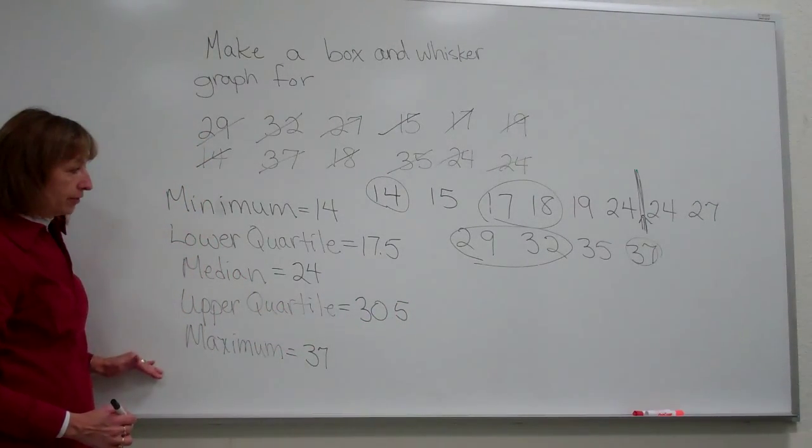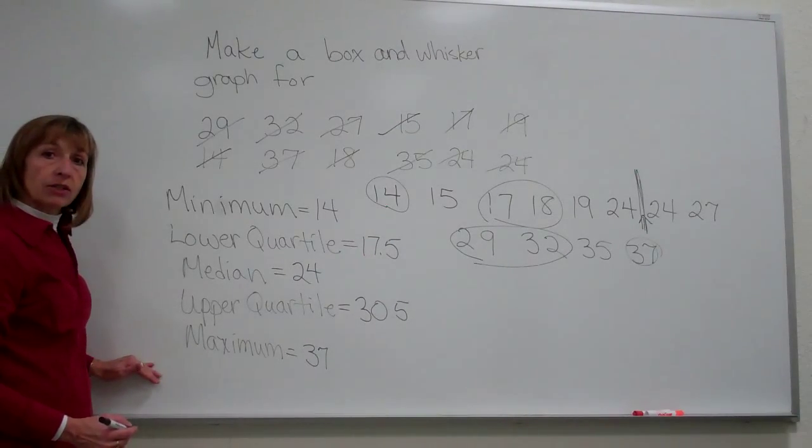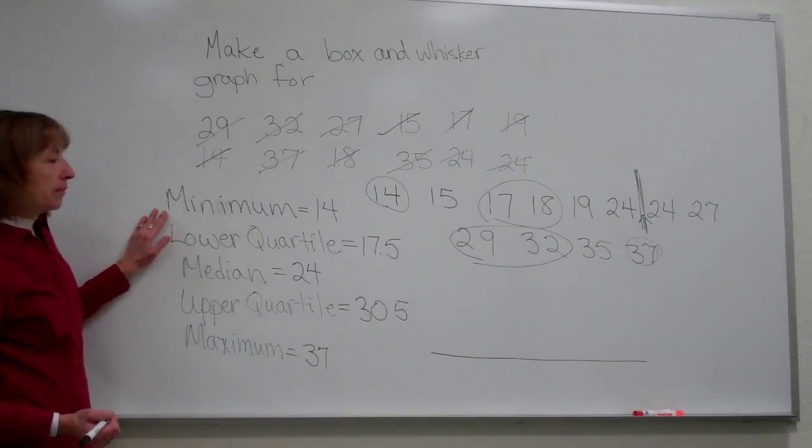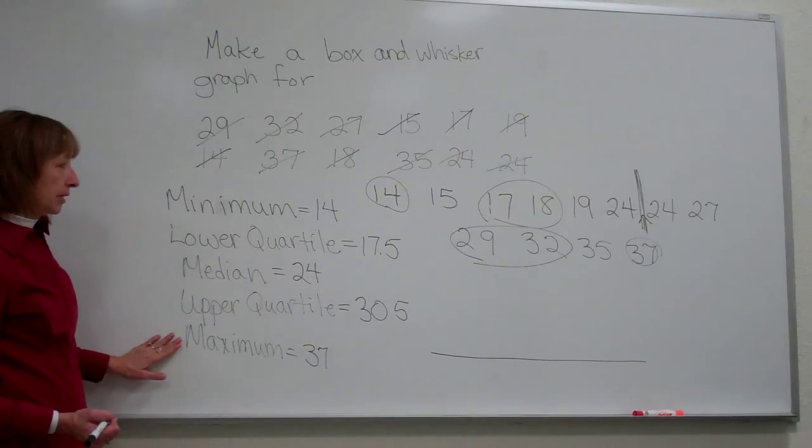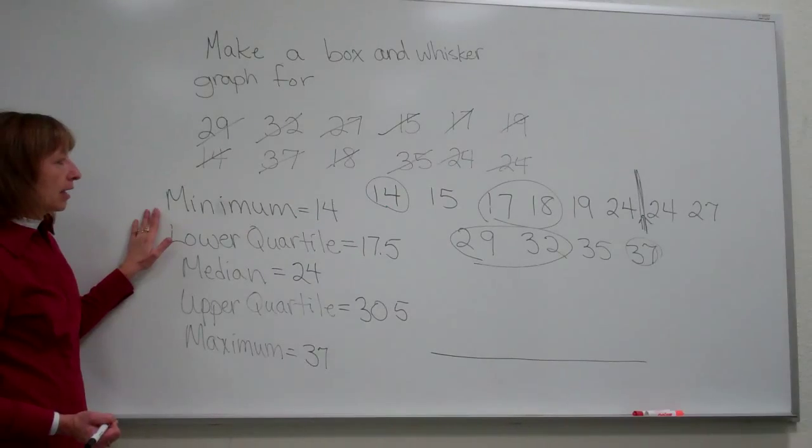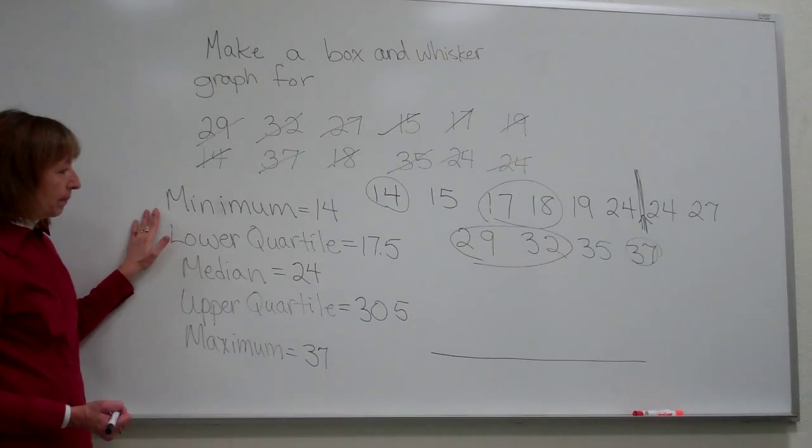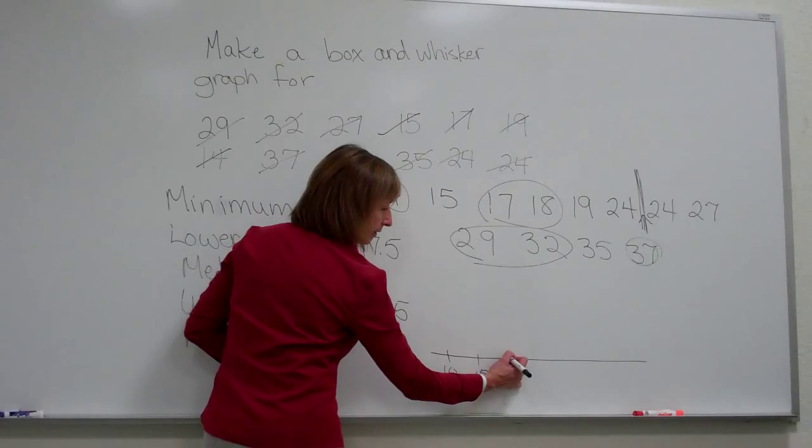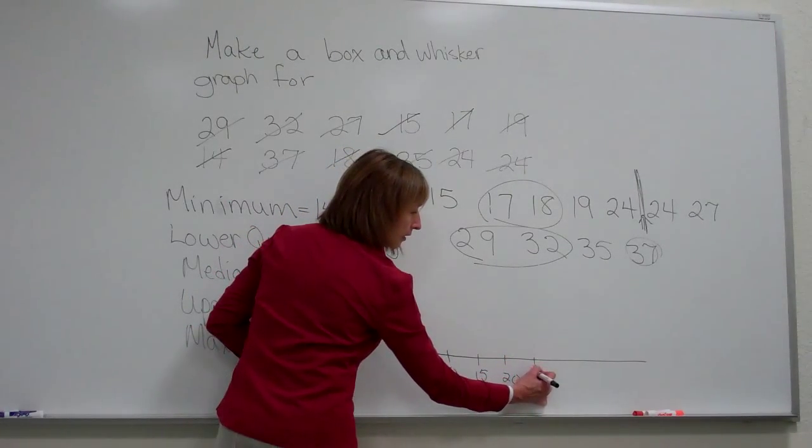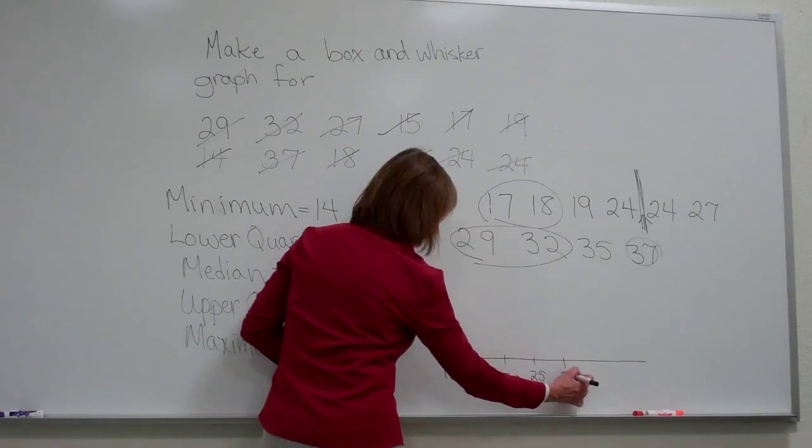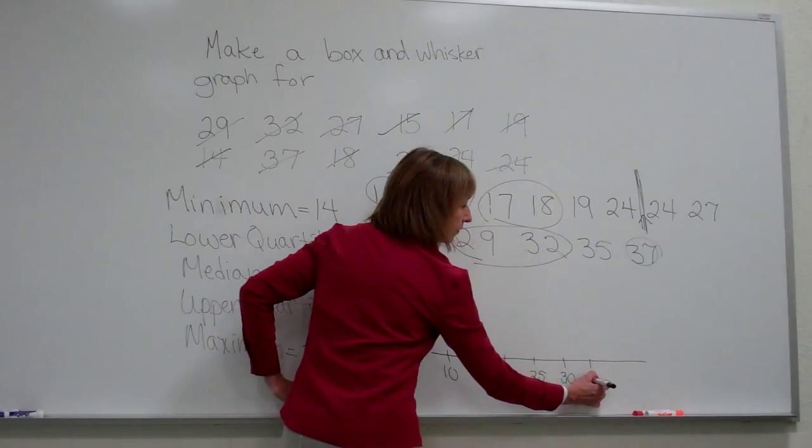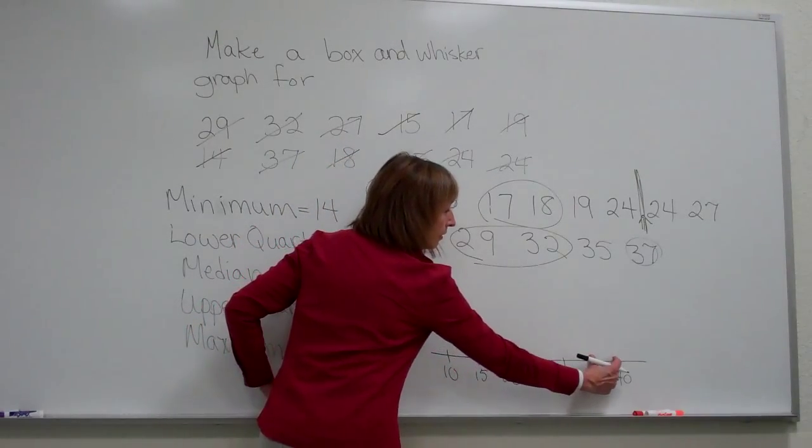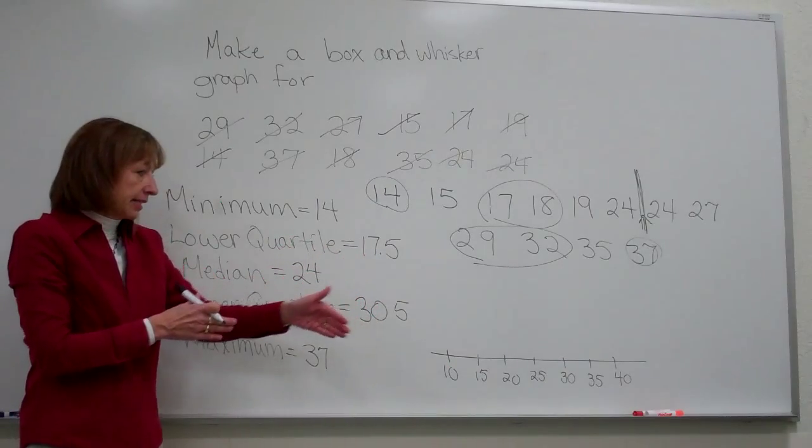Those are our five key values that we're going to use. Now, we want to go ahead and draw our number line. We see that our minimum number is 14, our maximum number is 37. If I start and begin at 10 and then increment by fives, I have 10, 15, 20, 25, 30, 35, and 40. I want to make sure that I've done equal increments of values and that I have them very consistently spaced.